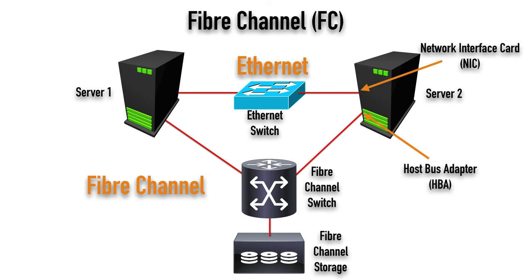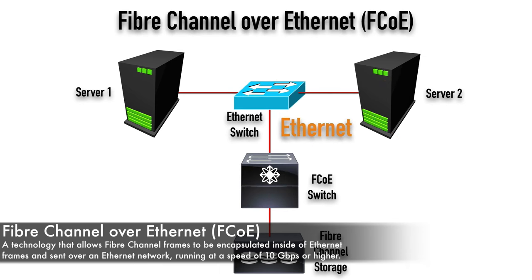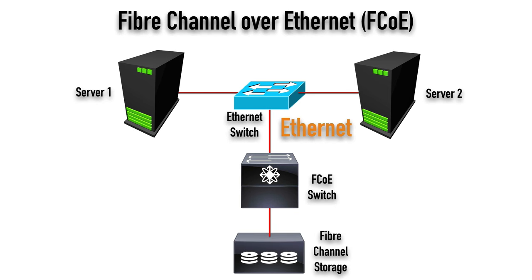A technology that's really getting popular these days in larger enterprises is something called Fiber Channel over Ethernet. We still get the benefit of Fiber Channel and we still get to do block-level storage. However, notice here the servers don't have to have a NIC and an HBA — they just connect into this Ethernet switch. We're Ethernet until we get to this FCoE, this Fiber Channel over Ethernet switch, and then we go Fiber Channel from that FCoE switch down to the Fiber Channel storage. This is a nice compromise: it helps us save on expense. We don't have to buy an HBA for the servers, we don't have to have that additional cable going from the server to the Fiber Channel switch, and we get high-speed throughput.